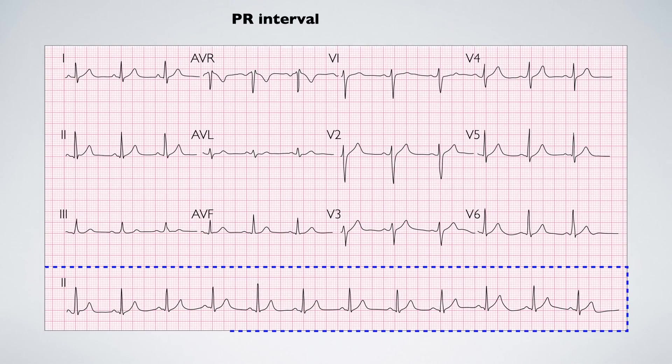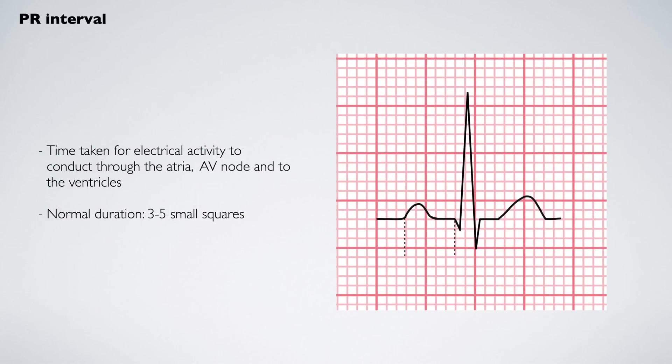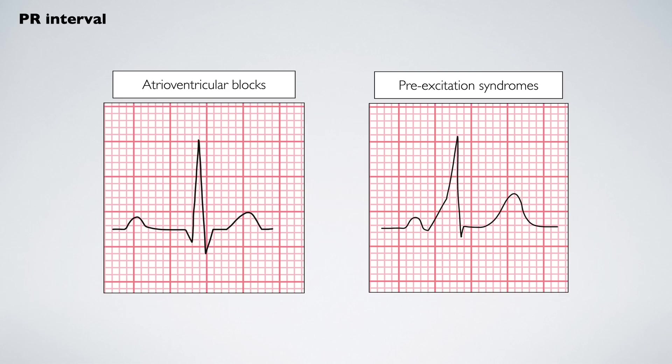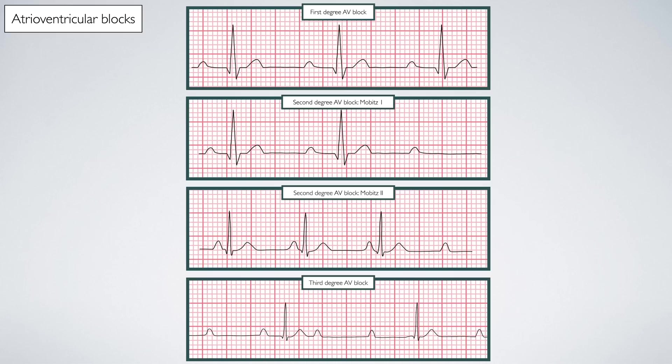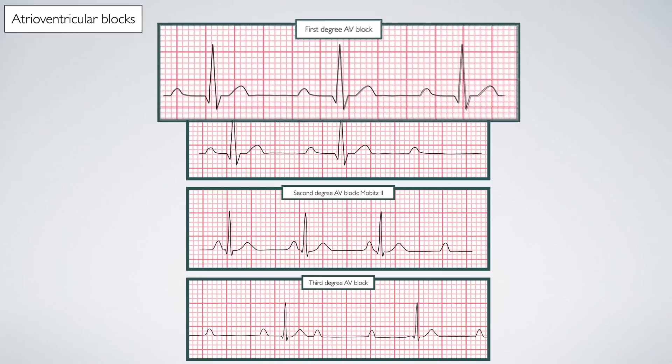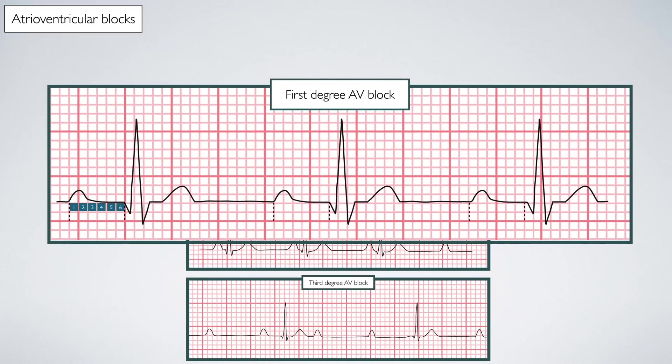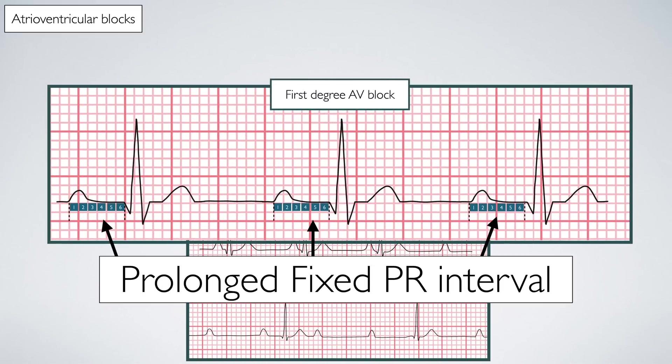Next we move on to the P-R interval. This is best assessed in the rhythm strip. The P-R interval represents the time it takes for depolarization to spread from the atria to the ventricles and should be between 3 to 5 small squares in duration. There are two groups of presentations to review: atrioventricular blocks and pre-excitation syndromes. The atrioventricular blocks are caused by a delay or complete loss of conduction through the AV node or the bundle of His. First degree heart block presents with a P-R interval greater than 5 small squares in length, and this duration is fixed.